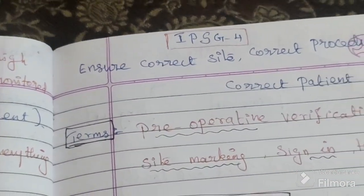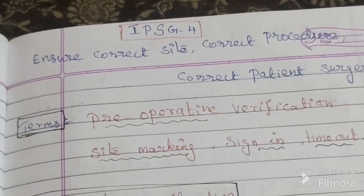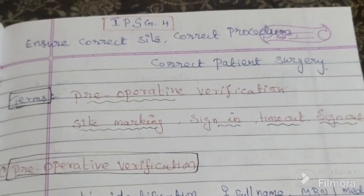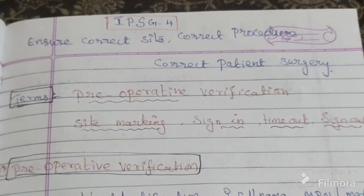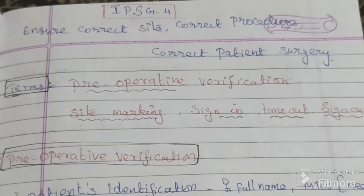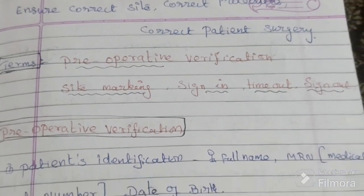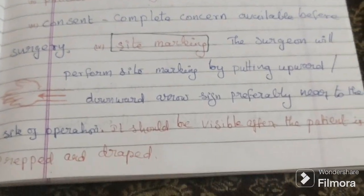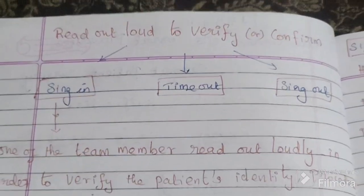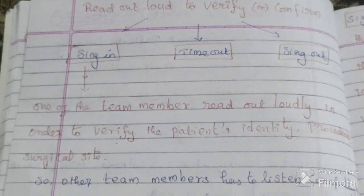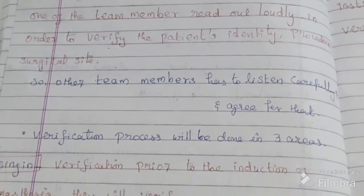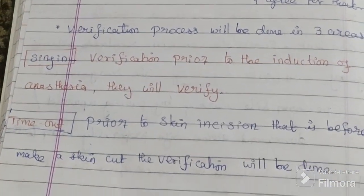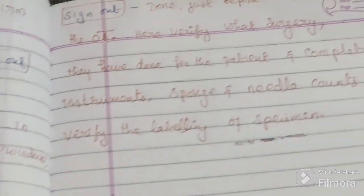In this video, we discussed international patient safety goal four: ensure correct site, procedure, and correct patient surgery. The three main things are sign in, time out, and sign out.